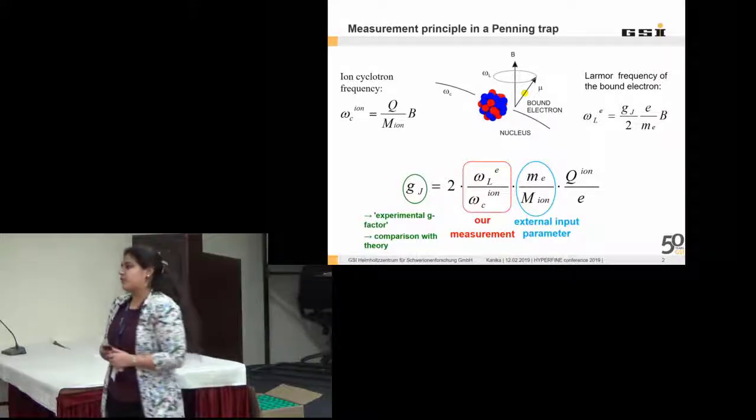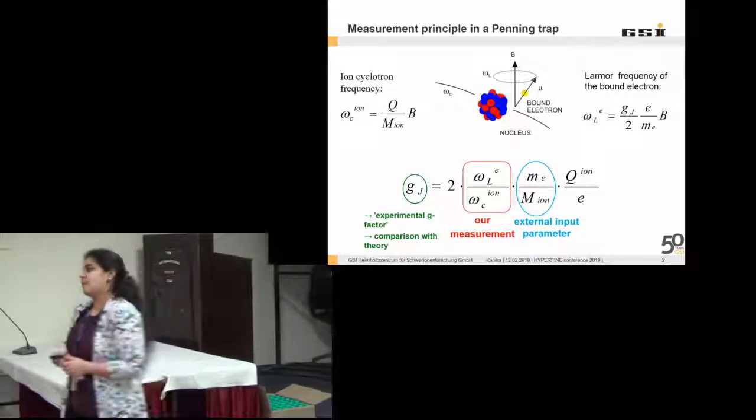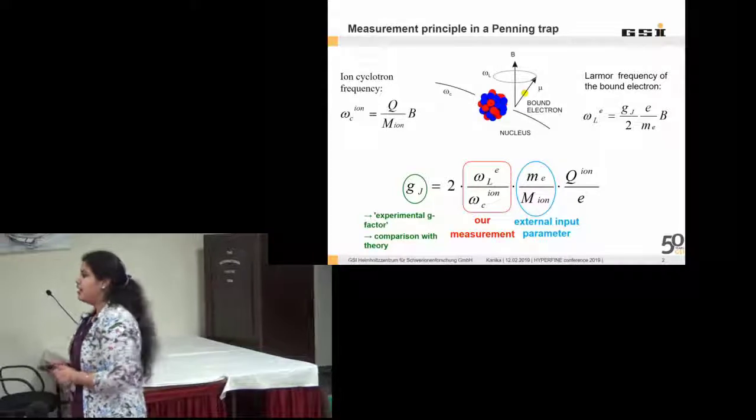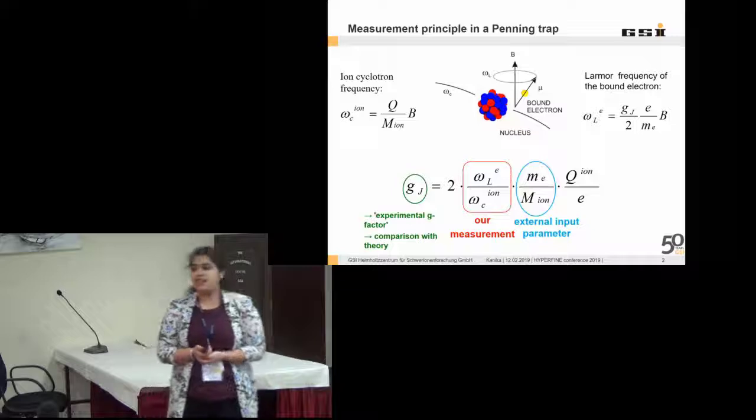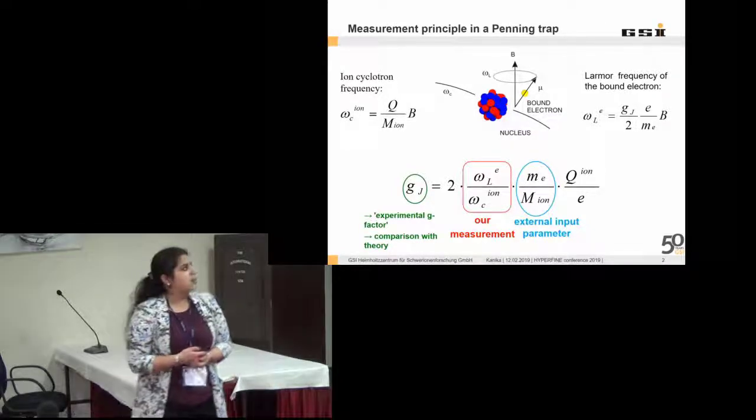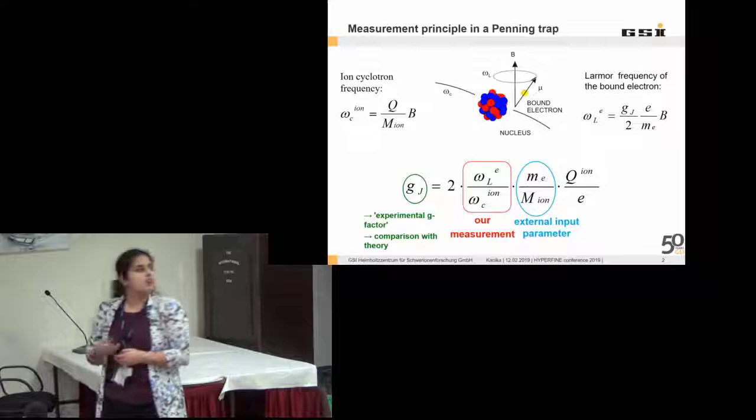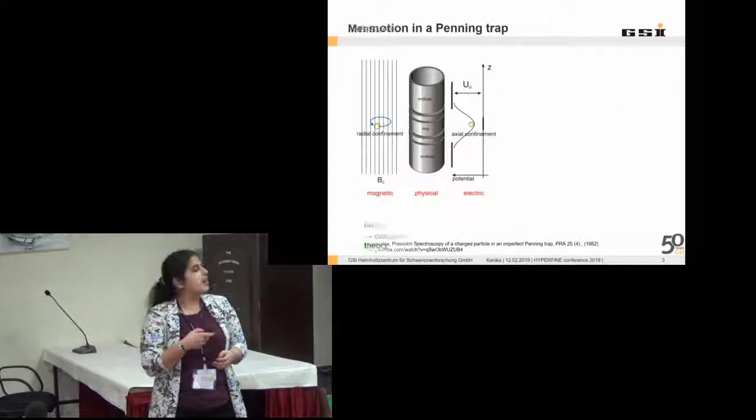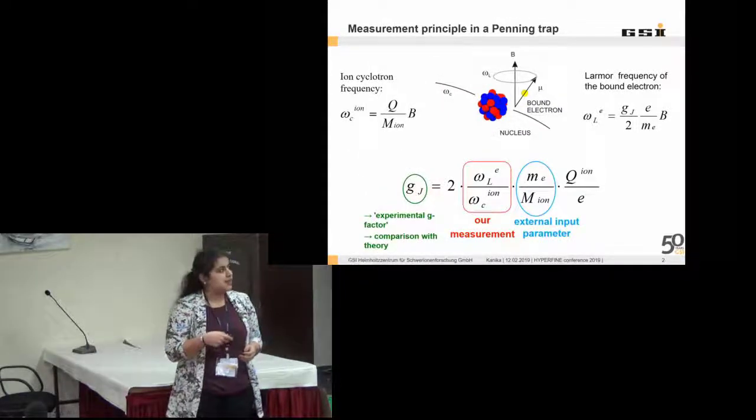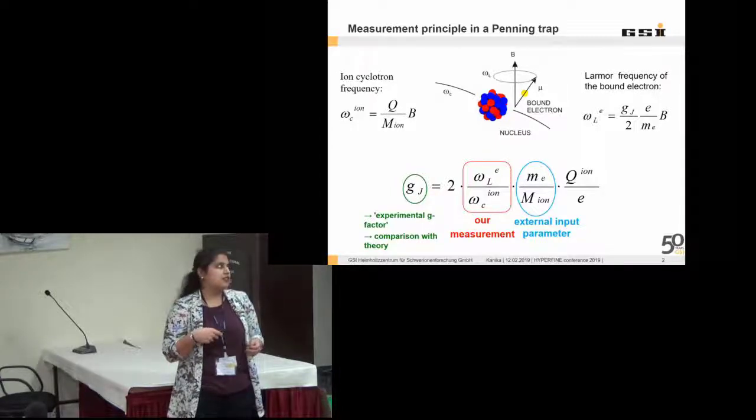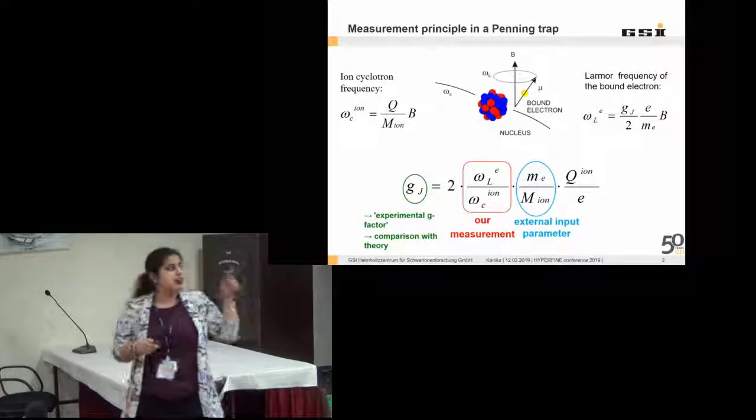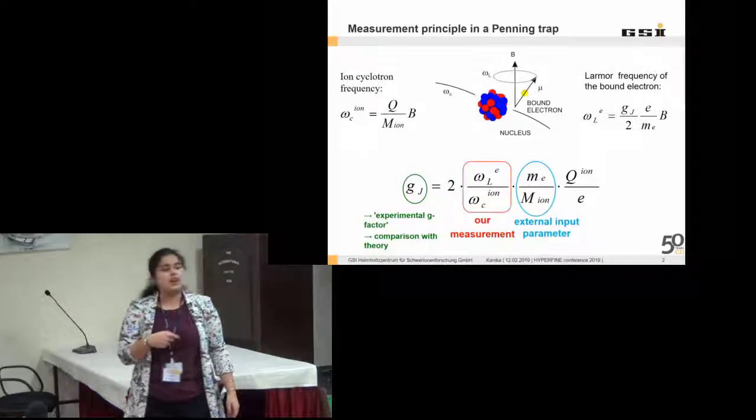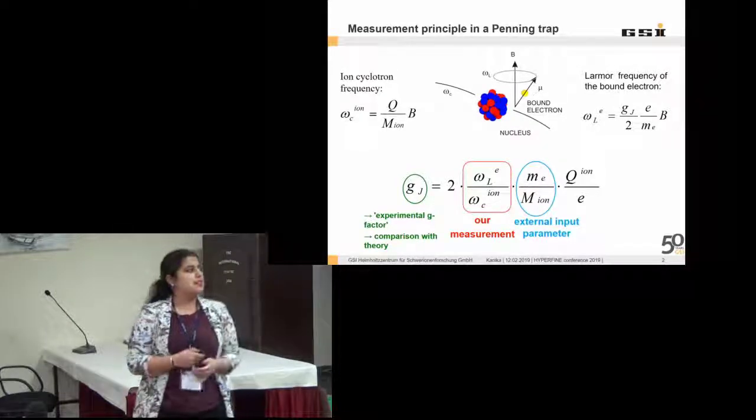Coming to some of the measurement principles in a Penning trap. A Penning trap is a device which uses the electric field as well as the magnetic field to trap charged particles. In our case, it is highly charged ions. When an ion is in a magnetic field, the ion will have a cyclotron motion with a frequency omega c, and the electron which is bound to the ion will have a Larmor precession around the magnetic field with a frequency omega l.